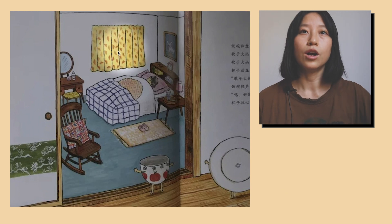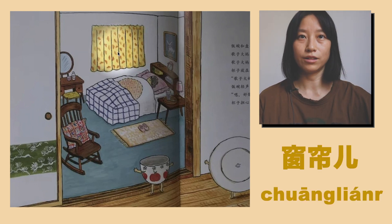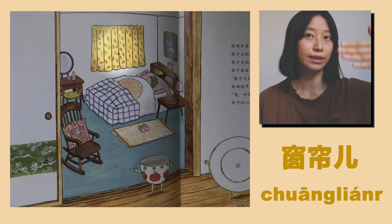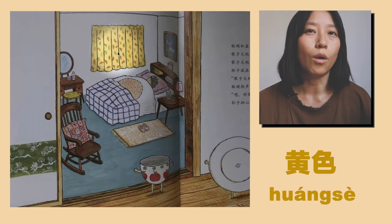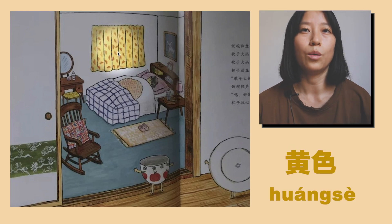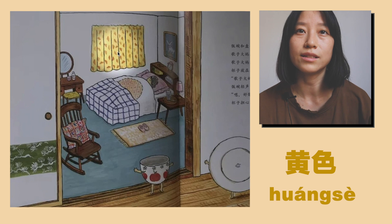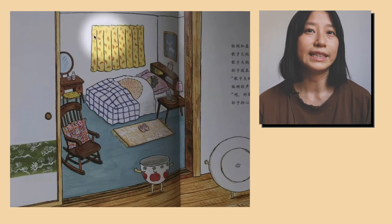然後在另一面牆上有一個窗簾。窗簾。一個黃色的窗簾。 (Then on another wall there is a curtain. Curtain. A yellow curtain.)